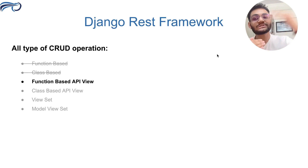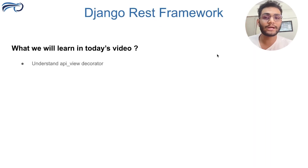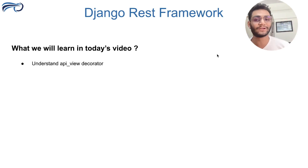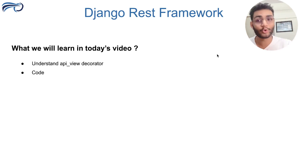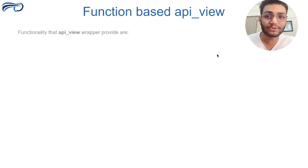Before going to this third type of CRUD operation, we need to understand one of the main decorators, which is the api_view decorator, and the functionality that it brings. After we understand that, we'll move to our IDE and start writing the code for this CRUD operation.